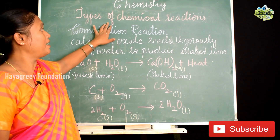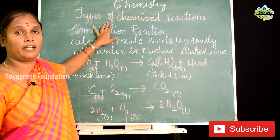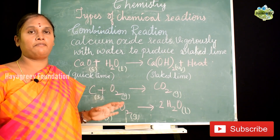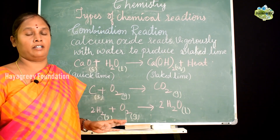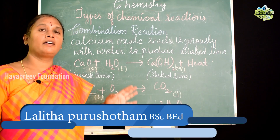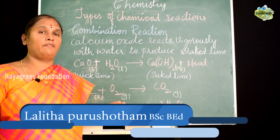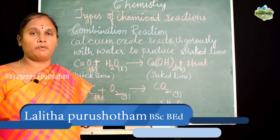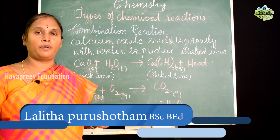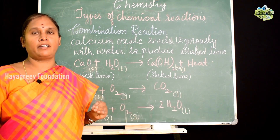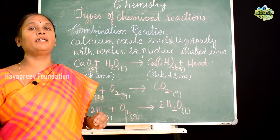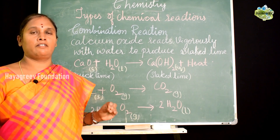Coming to understand types of chemical reactions, we have four types: the first one is combination reactions, the second one is decomposition reactions, then we have displacement reactions as well as double displacement reactions.